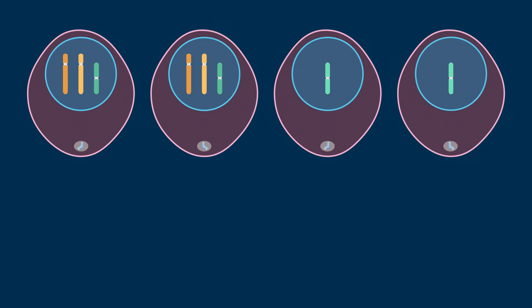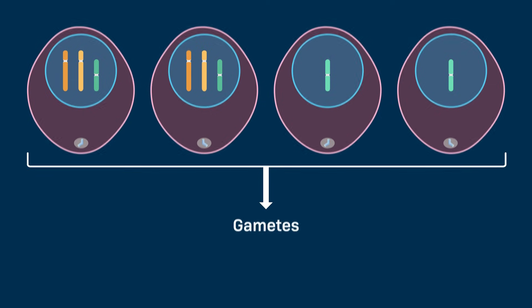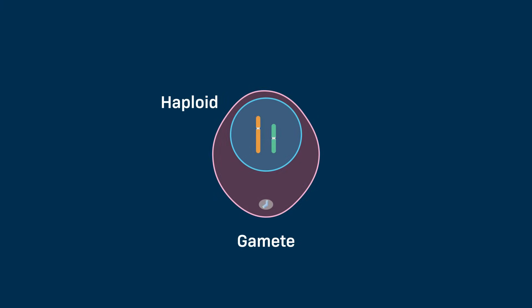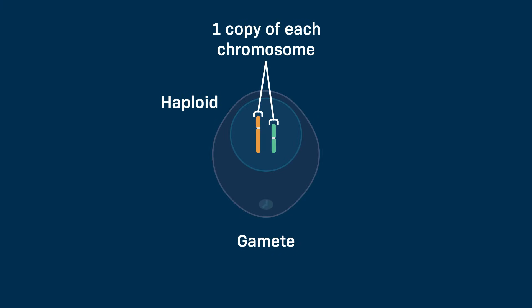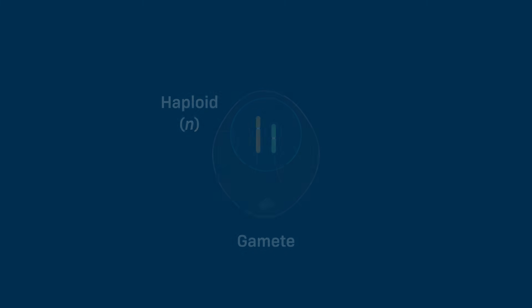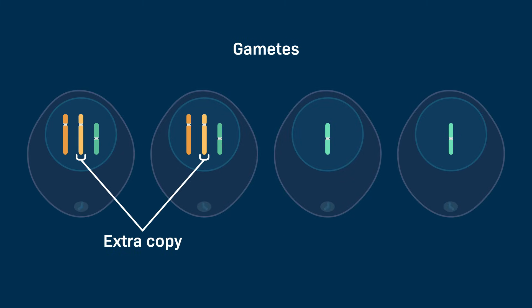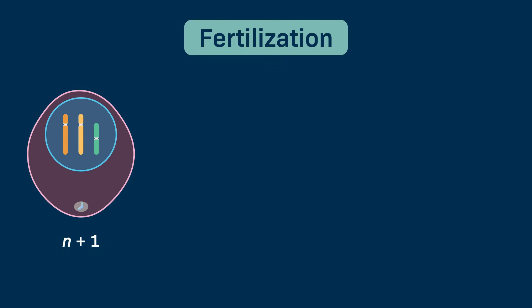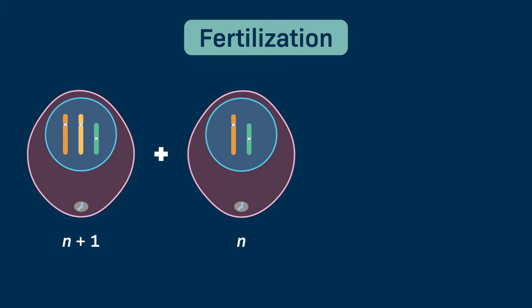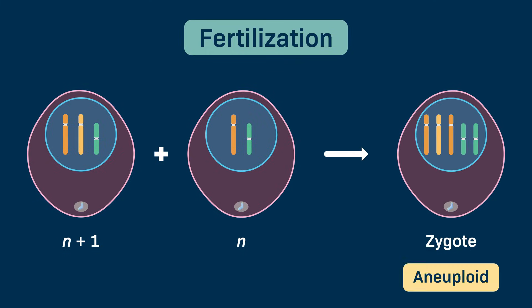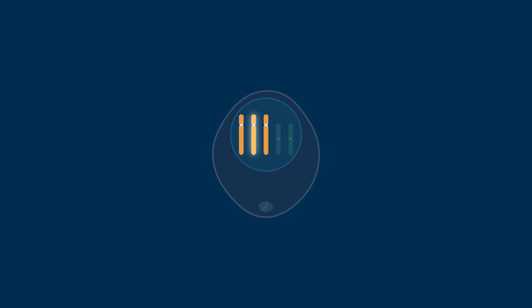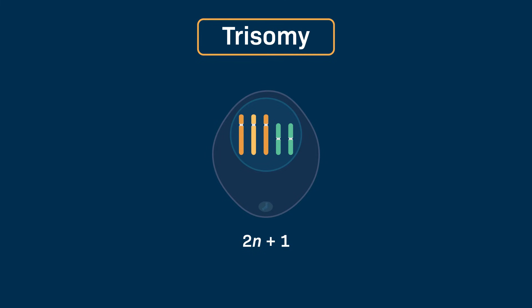If these four resulting cells go on to form gametes, the gametes will also vary in their number of chromosomes. A typical haploid gamete has one copy of each chromosome and is designated as n. Gametes with an extra copy of a given chromosome are denoted as n plus 1. During fertilization, if an n plus 1 gamete fuses with a normal haploid gamete, the resulting zygote will be aneuploid as it has an extra copy of a given chromosome. This addition of a third copy of a given chromosome in a diploid organism is called trisomy and is denoted as 2n plus 1.